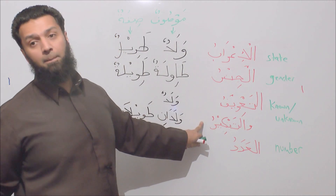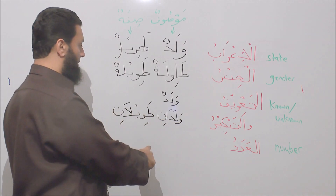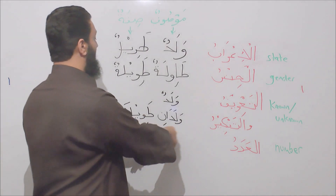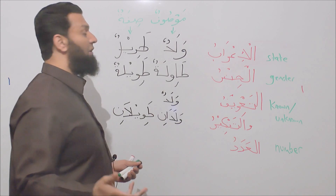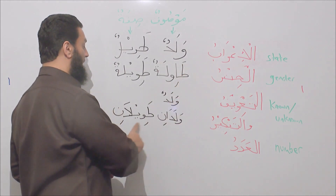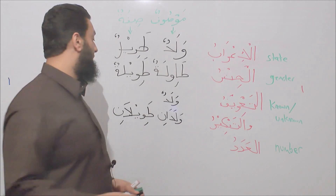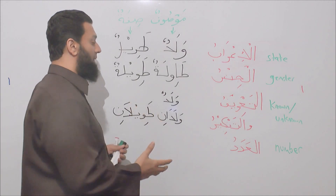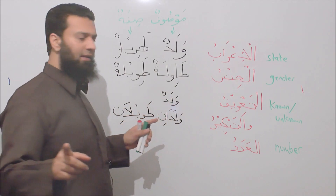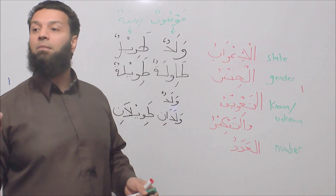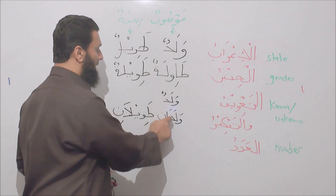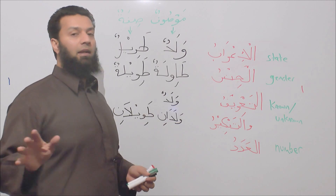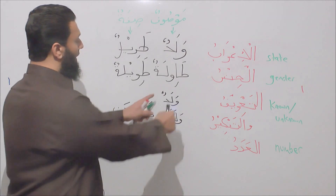Waladani tawilani — does it match in al-ta'arifu wa-tankir? Yes, because both are unknown; they don't have al preceding them. Did they match in al-jinsu? Yes — waladani is male, tawilani is male. Did they match in al-iqraab? Yes, because waladani and tawilani are both marfuun, even though the ending has a kasra. The kasra in the dual does not denote majrur — the ani on the end represents marfuun in the dual. We'll discuss that in greater detail in further lessons.